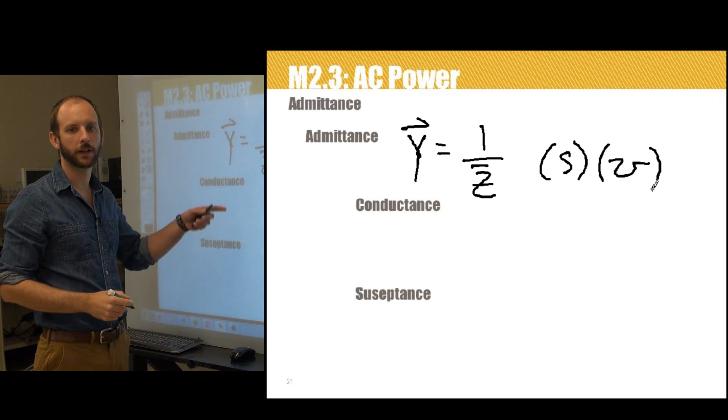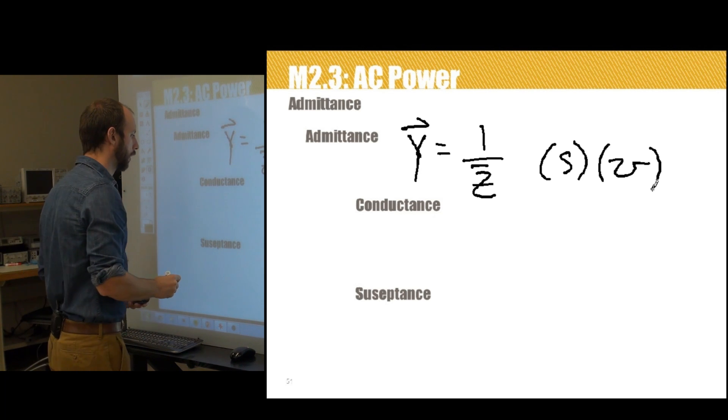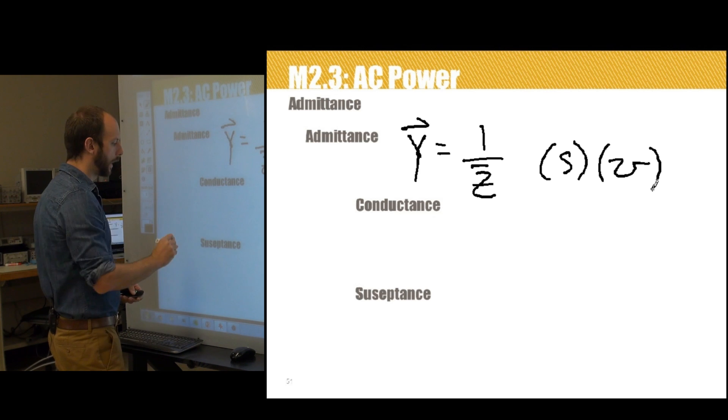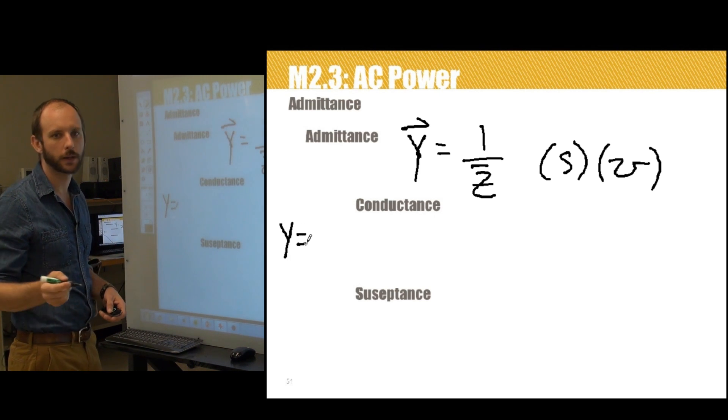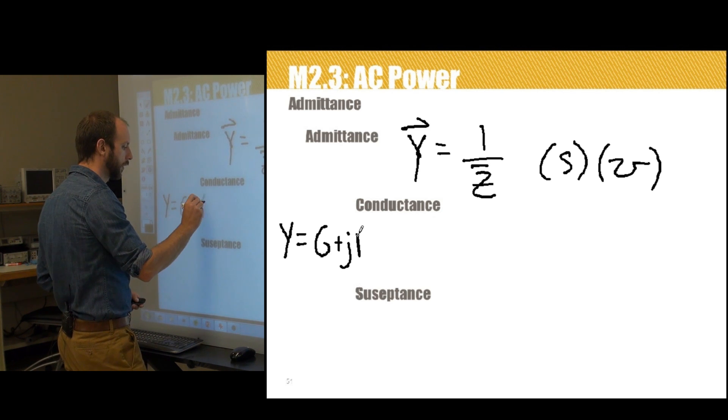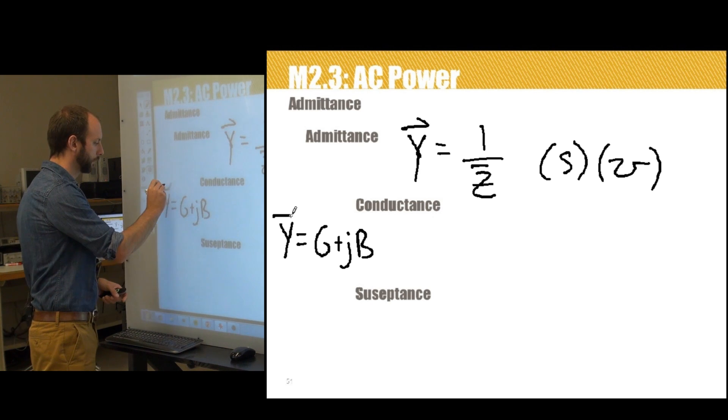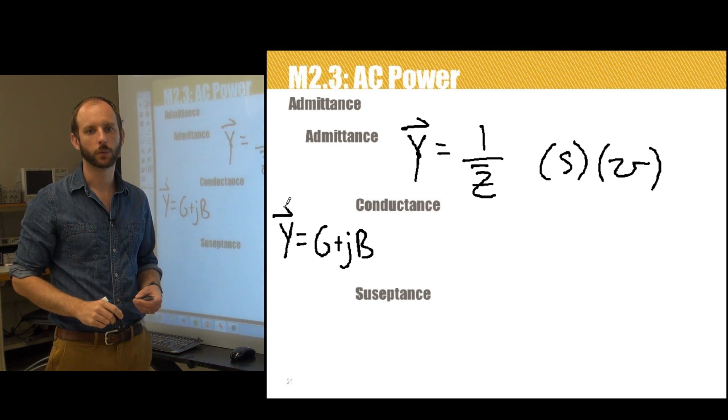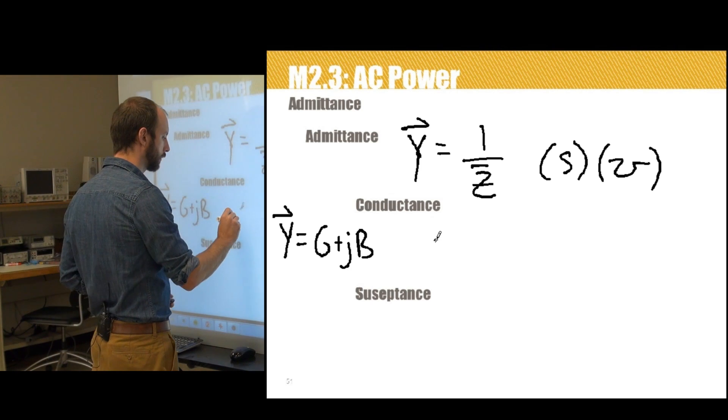The complex value can be decomposed into its real and imaginary parts. Y in its rectangular form is G plus jB. It's a complex number in rectangular form. We see that G here is called conductance.